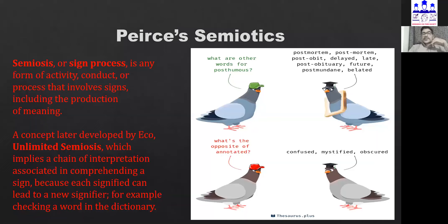Peirce talks about a very important concept called semiosis — the process of interpretation and meaning-making. Wherever a sign is involved and there is meaning-making, it is semiosis. Umberto Eco developed from this the concept of unlimited semiosis: the meaning-making process is continuous, implying a chain of interpretations in comprehending a sign. For example, to understand 'posthumous,' you must understand the prefix 'post' meaning 'after.' Each signified can lead to a new signifier. As Derrida says, we need to interpret interpretations more than we interpret things — interpretations are very important.